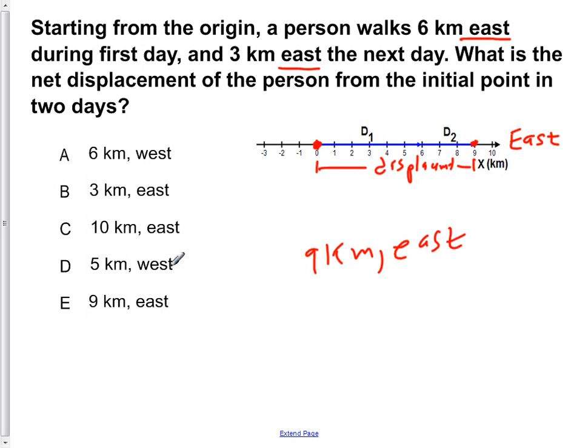So we go through our answer choices and find one that corresponds to that. A is six kilometers west. That's wrong. B is three kilometers east. Direction is right, displacement is wrong. C is ten kilometers east. The displacement again is wrong. Both of these are wrong because it's saying to the west. It doesn't state anything moving in the opposite direction. So E states nine kilometers east which is the result that we determined by looking at the number line here.